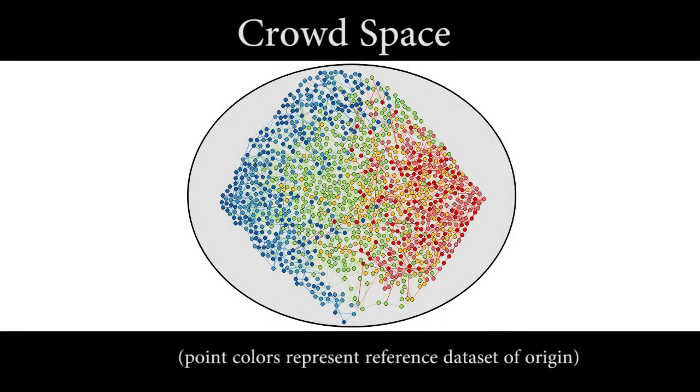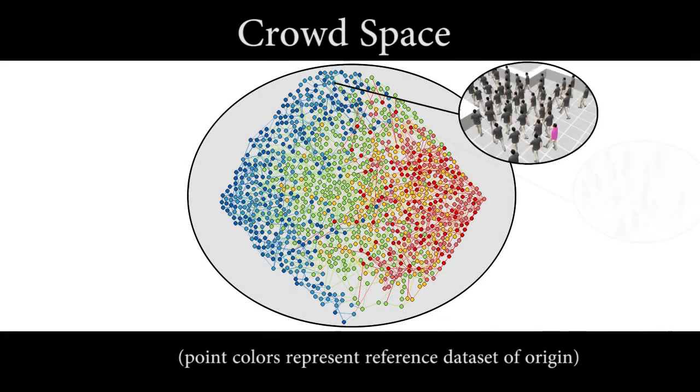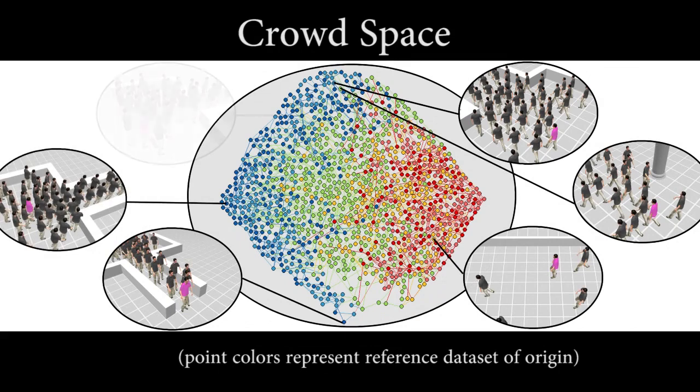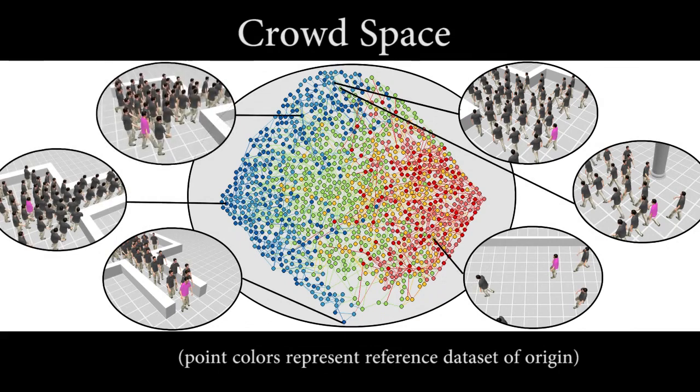Our space captures the range of situations a crowd can be in. As this 2D projection of the space shows, similar scenarios are grouped together. Dense scenarios on the left, sparse on the right, agents entering congestion on the top, those leaving on the bottom, and so on.